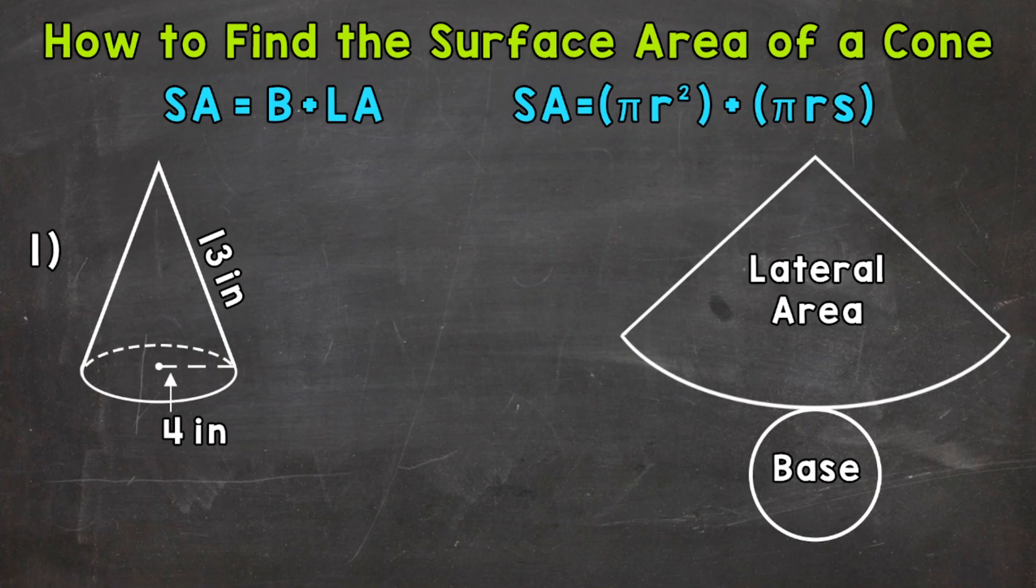When it comes to cones, we have two surfaces that we're going to find the area of and then add those areas together to get the total surface area. We have the area of the base and then the lateral area. The lateral area is the area of the curved surface, the part that wraps around.